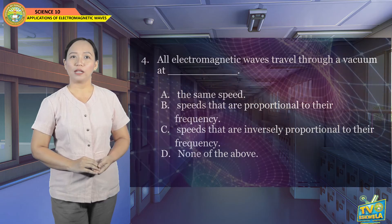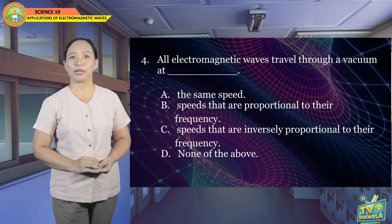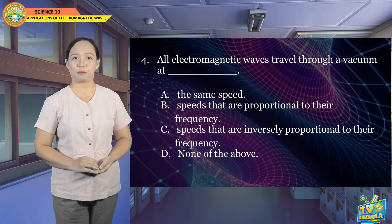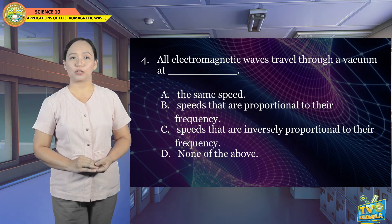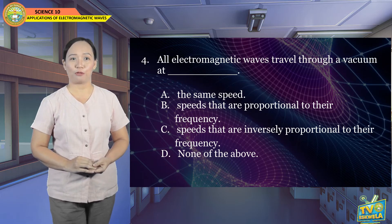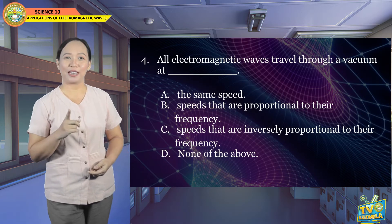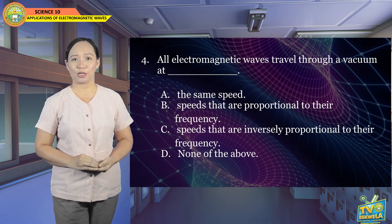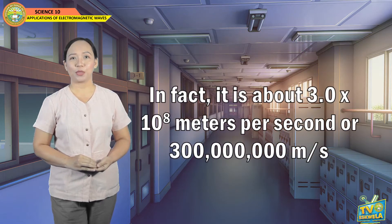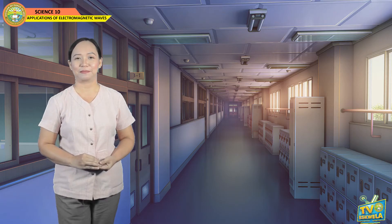Number 4: All electromagnetic waves travel through a vacuum at... A. The same speed, B. Speeds proportional to their frequency, C. Speeds inversely proportional to their frequency, D. None of the above. EM waves travel through a vacuum at the same speed — letter A. In fact, it is about 3 × 10⁸ meters per second, or 300 million meters per second.